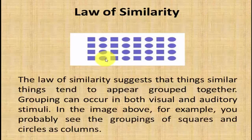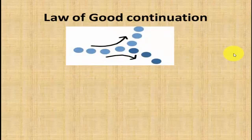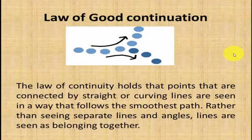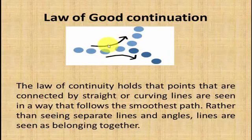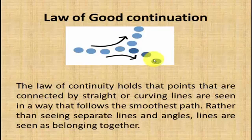The law of continuity holds that things coming together in a continuation seem to be in a flow. Points connected by straight or curving lines are seen in a way that follows the smoothest path. Whether the line curves upward or downward, if you hide three spots the remaining line is still seen as one group, and if you hide the bottom three spots, the upper curve appears to be in another line.